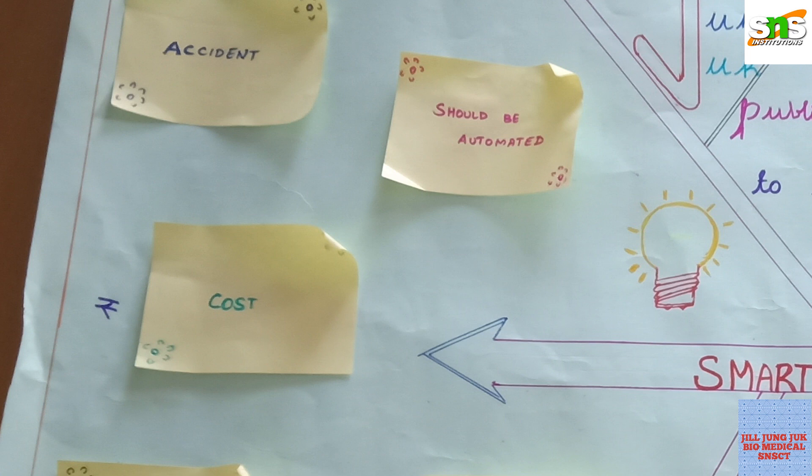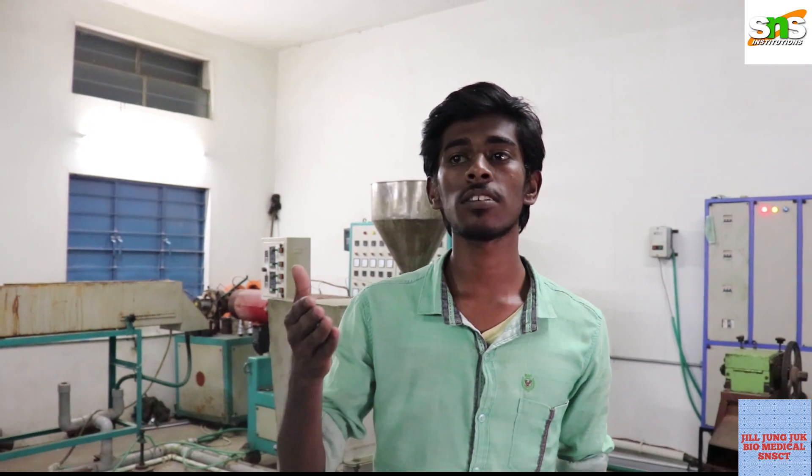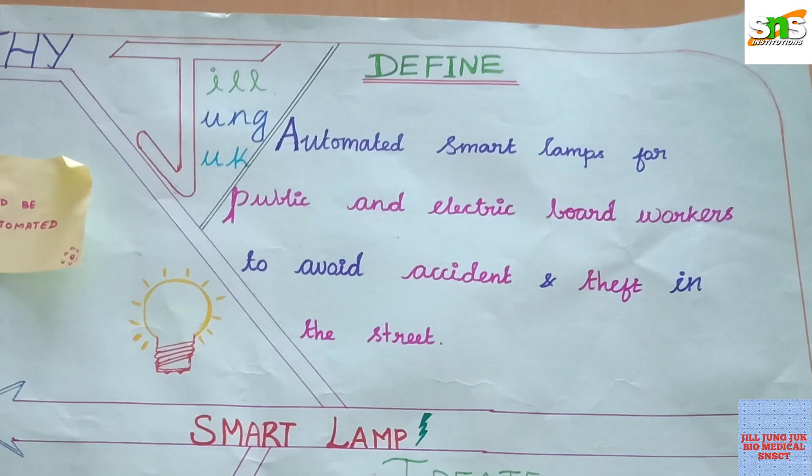We asked the street man if a light which is automated and which glows even during a power cut would help. We took it as a challenge and designed a light that is very cost-efficient, automated, and which glows even during a power cut. We SNS students succeeded in that. Our defined part is: an automated light system for the public and electricity board workers to avoid accidents and theft activities in the streets.